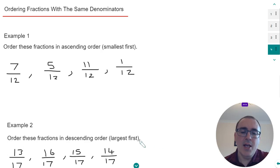Hi guys, I'm Mark. Today I'm going to show you how to order fractions with the same denominator. This means the bottom numbers of the fractions which you're going to order will be the same. So let's have a look at the examples which we have.